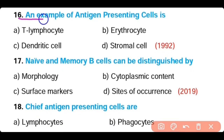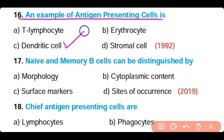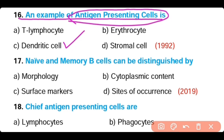Question number 16. An example of antigen-presenting cells is: B lymphocytes, erythrocytes, dendritic cell, or stromal cell. The correct answer is Option C. Dendritic cell is an example of an antigen-presenting cell.